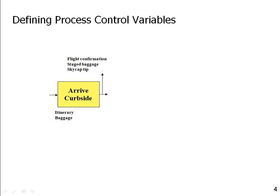We have this process map. As we arrive at the curbside, we have an itinerary and baggage as inputs. We go through the process and the output is the flight confirmation, staged baggage, and a skycap tip. The first thing to pay attention to is that the inputs and outputs here are in the singular. When you look at singular inputs and outputs, that usually means you're not looking at a process — you're looking at a transaction. The process itself is intended to handle all of the transactions as they arrive.